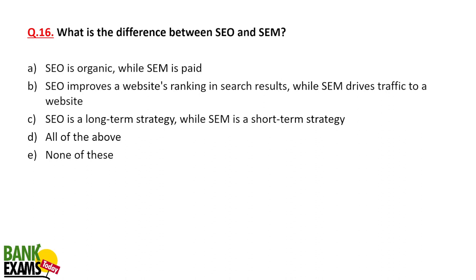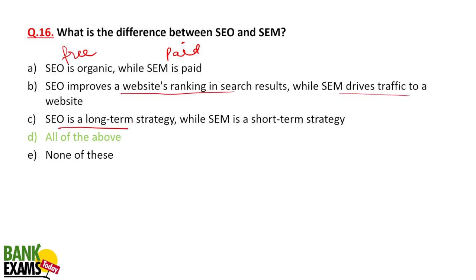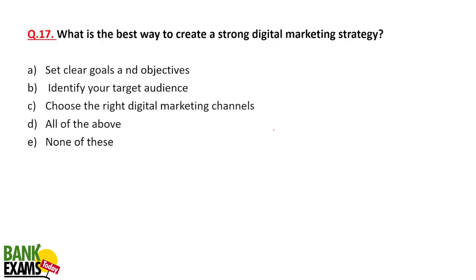Difference between SEO and SEM: SEO is organic — most of the time it is free traffic. SEM, search engine marketing, is paid. SEO improves the website's ranking in search results; SEM drives traffic to a website. SEO is long term; SEM is short term and paid.